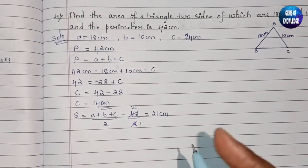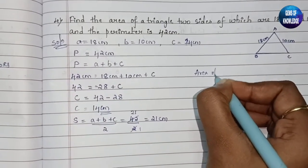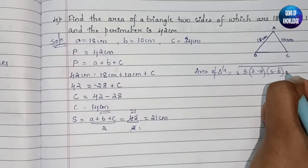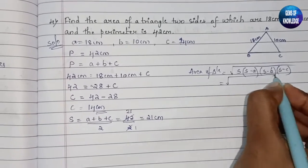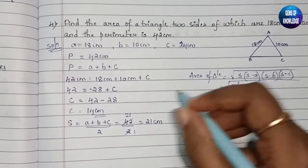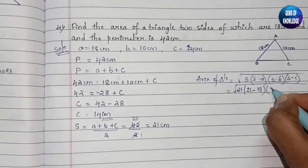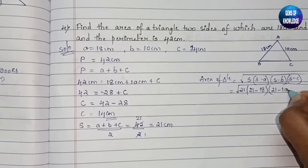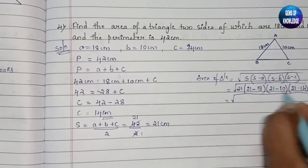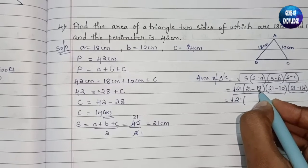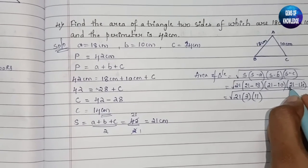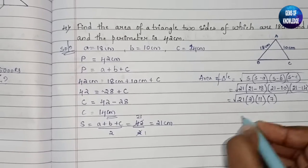Now let us substitute into the formula. Area of triangle equals root of s(s−a)(s−b)(s−c). So that is root of 21 into (21−18) into (21−10) into (21−14), which gives root of 21 into 3 into 11 into 7.